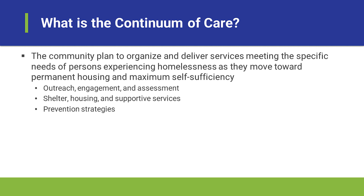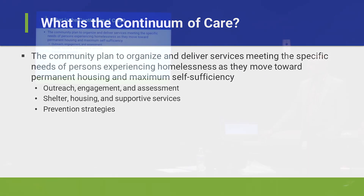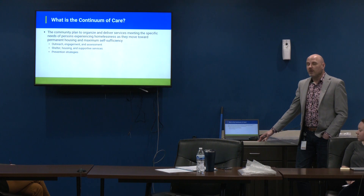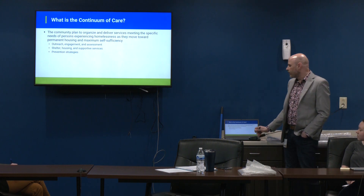Another way of framing this is that this is our community-specific plan and system designated to meet the needs of persons who are experiencing homelessness. That entails not only meeting the immediate need of shelter, but also moving people into permanent housing, offering opportunities for supportive services, connecting people with education and employment, and promoting access to mainstream benefit programs as part of a plan for self-sufficiency and sustaining housing over time. We should also be focused on prevention strategies — how do we divert persons from entering our system altogether, reducing overall numbers and keeping people from experiencing the traumatic experience of homelessness.